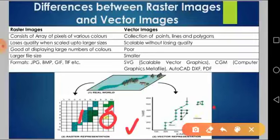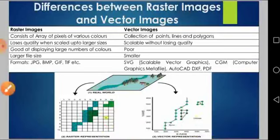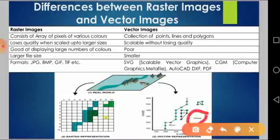In the vector representation of the same real world, using x-axis and y-axis coordinates, the river path is shown as a zigzag line, plantation or trees are shown as a small polygon connecting dots over that area, and the house is represented as a single dot indicating its location.